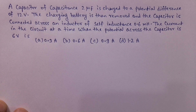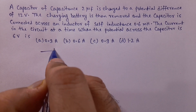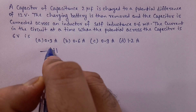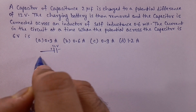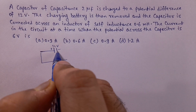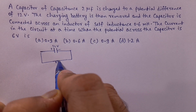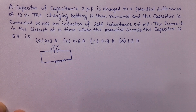So this question को हम लोग कैसे बनाएंगे? Very interesting question. So यह LC oscillation का है. Capacitor है, इसको 12V से charge किया गया — plus minus. उसके बाद एक inductor के साथ इसको connect कर दिया गया इस तरह से.